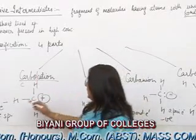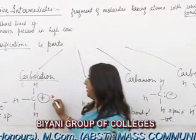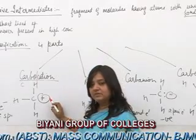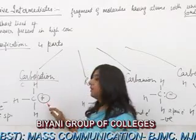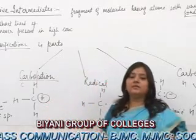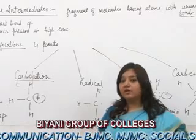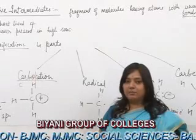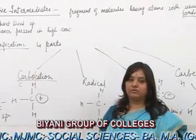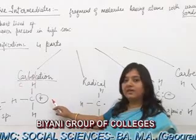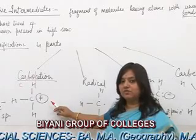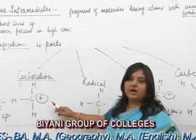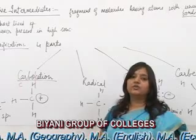The carbocation has no non-bonding electrons in its structure and is a positively charged species. They are also called electrophiles — electron-loving species — that can react with nucleophiles or attack places where there is an excess of electrons. These are sp2 hybridized and planar in structure, with a bond angle of 120 degrees, resembling the structure of BF3.